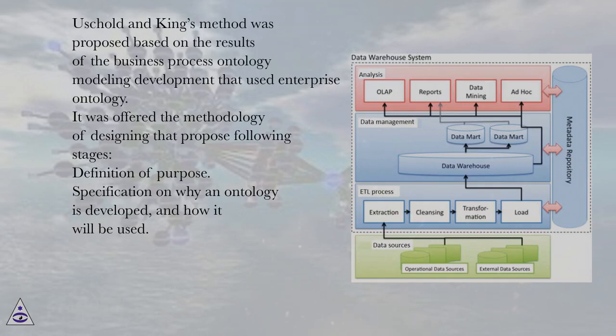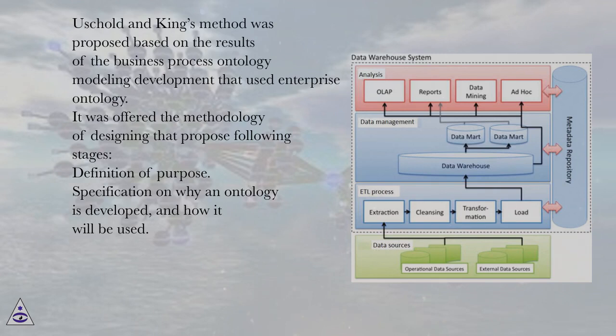Osgold and King's method was proposed based on the results of the business process ontology modeling development that used enterprise ontology. It offered a methodology of designing that proposed the following stages.